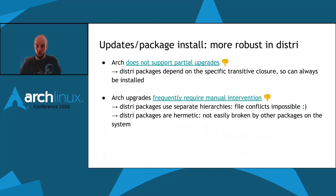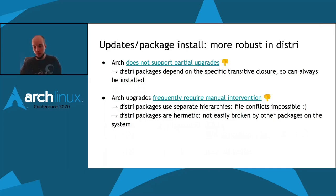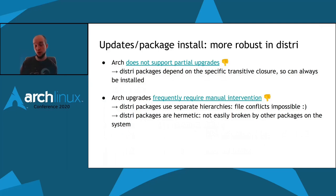Arch does not support partial upgrades, meaning that if I want to install a new program I need to update my package lists and also update my entire system first — that's a big distraction. In DISTRI, however, packages depend on the specific transitive closure of dependencies when they were built, so they can always be installed on the system and will always use exactly those dependencies. They will always work, and there's no need to have the whole system consistent.